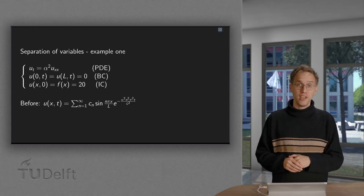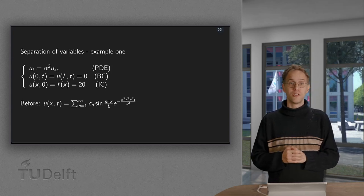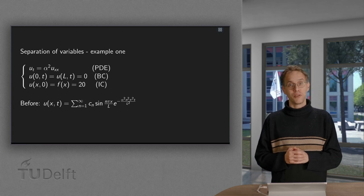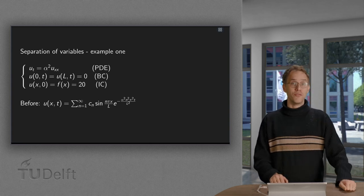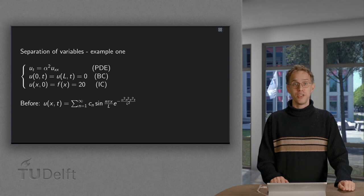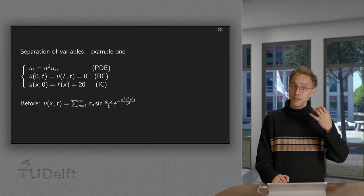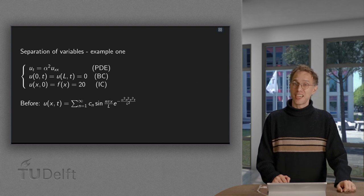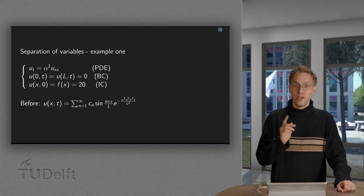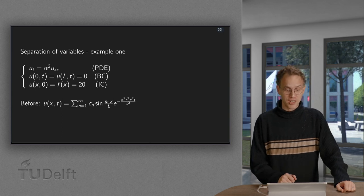We have seen a procedure to solve the heat equation with Dirichlet boundary conditions for some general initial condition. How does this work if we use a specific initial condition? And how do the solutions look? And do these solutions correspond to what we would expect intuitively? We will see all of that in the first example.